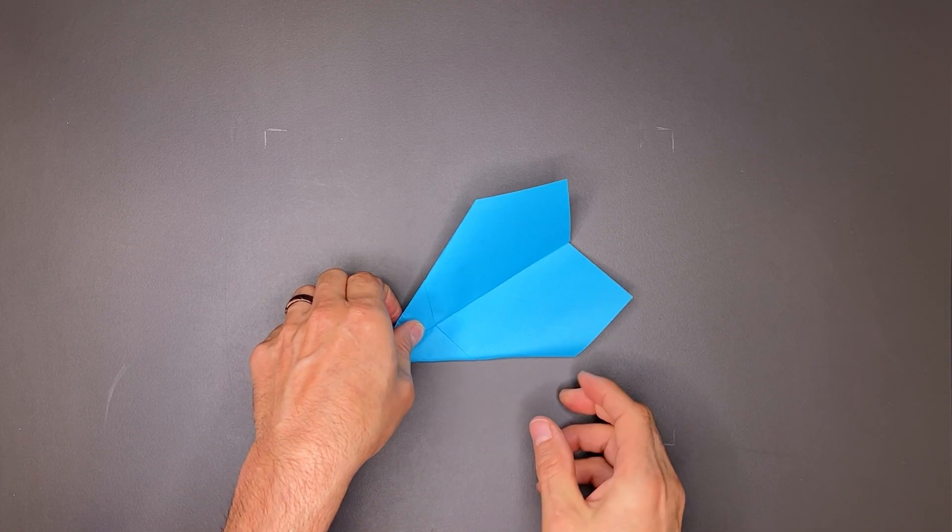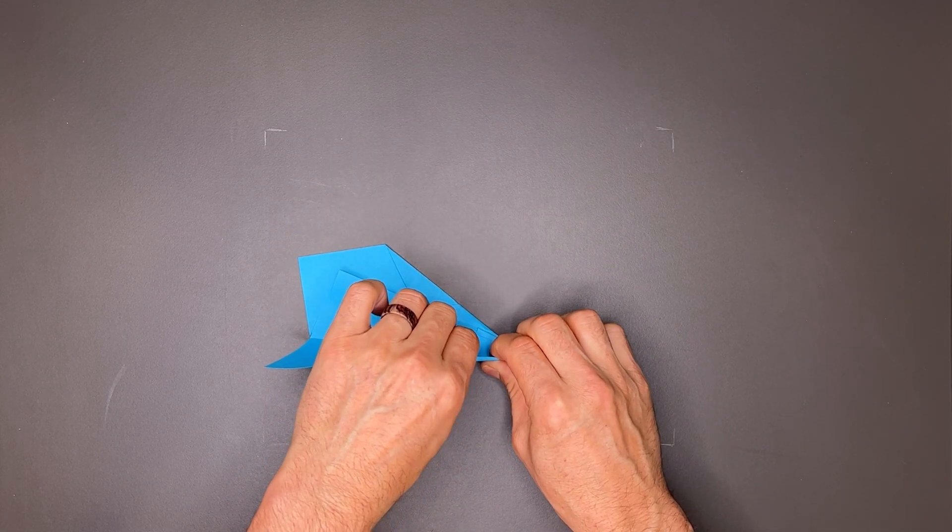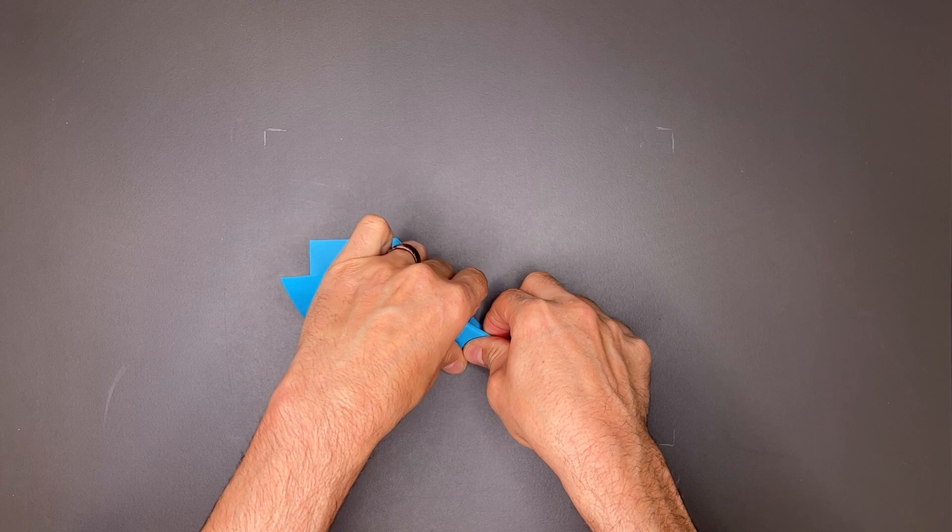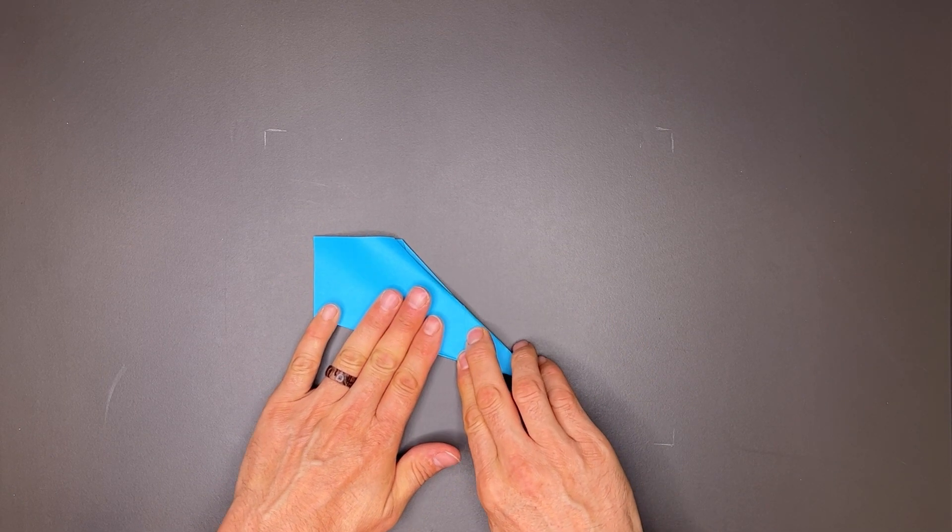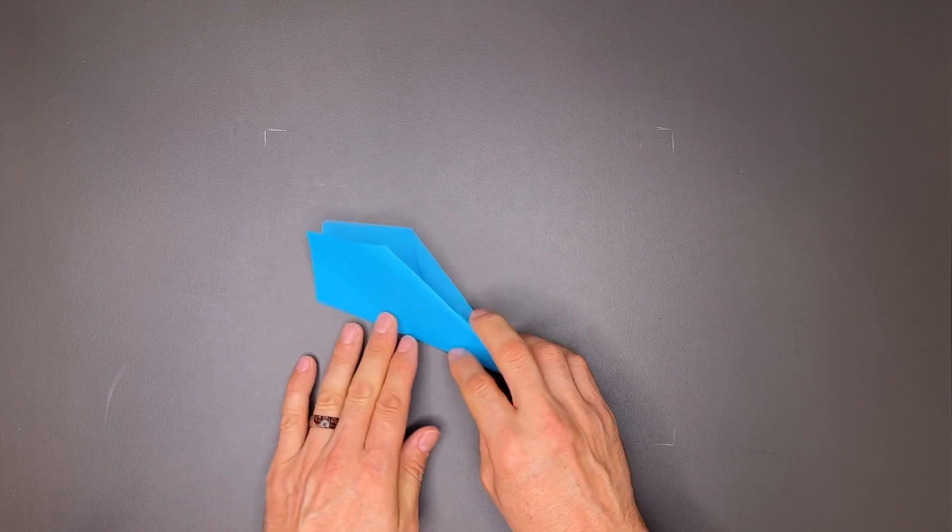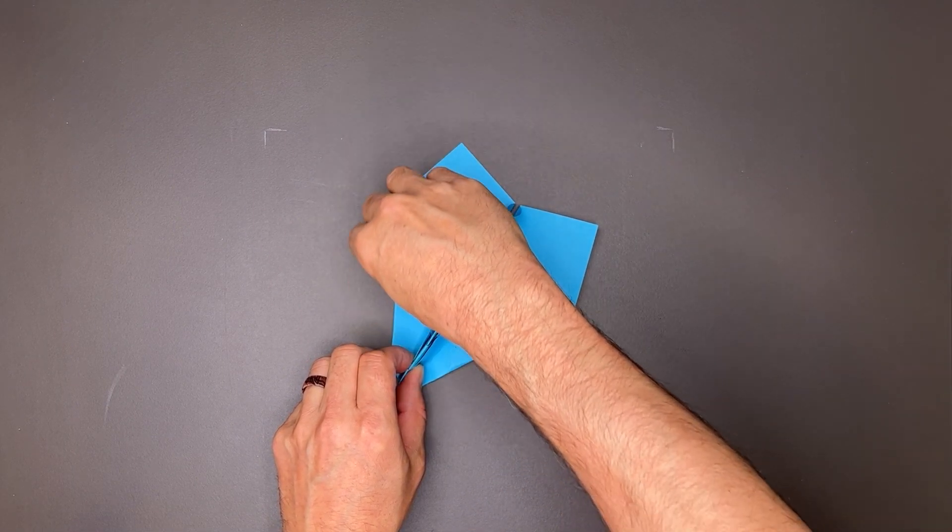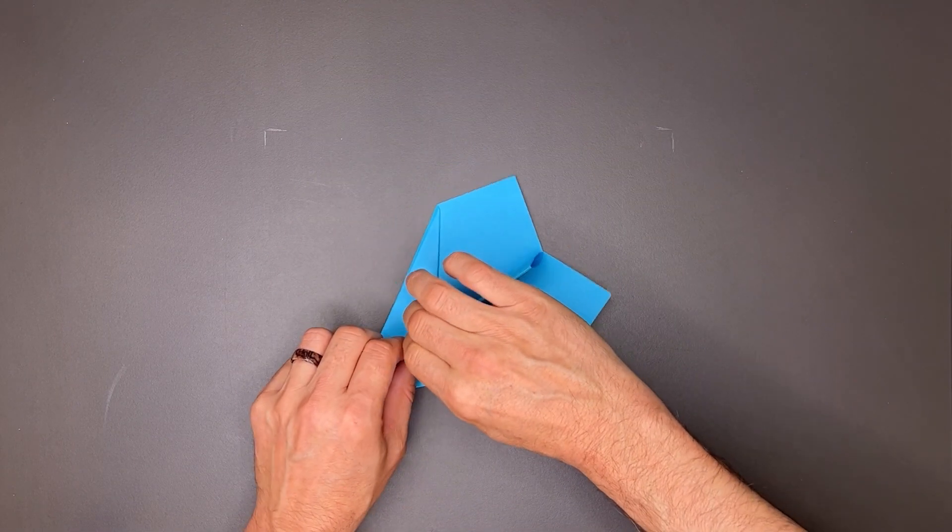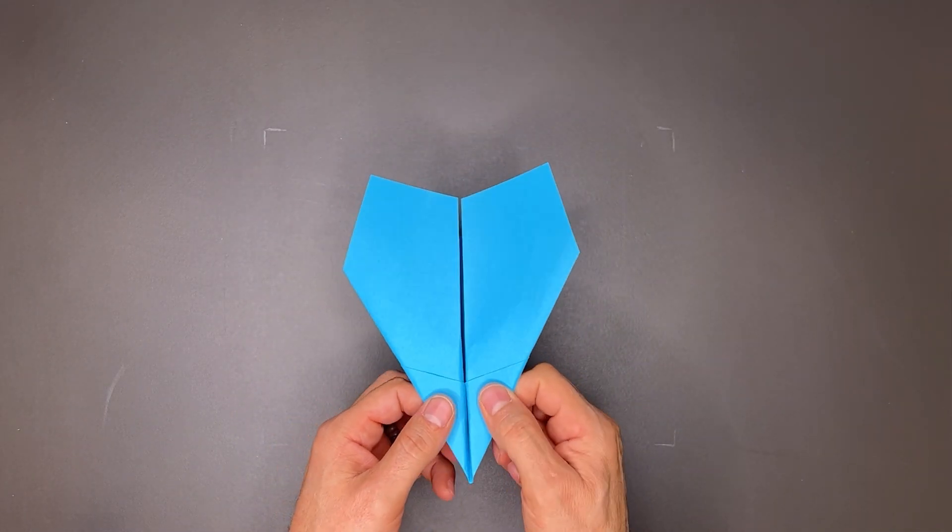There we go. And then I'll do the same thing on this side. I'm going to push out all the bubbles here of the wings. Make all these edges crisp. And there we have a finished Rebel.